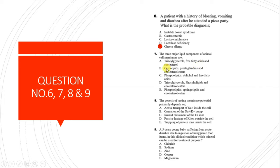Question 7: The three major lipid components of the animal cell membrane. The correct answer is D - phospholipids, sphingolipids, and cholesterol, because the animal cell membrane is majority composed of these. No free fatty acids are present in the cell membrane.